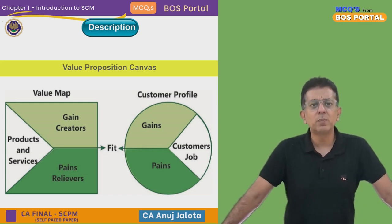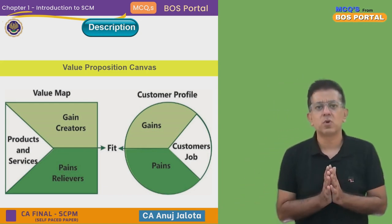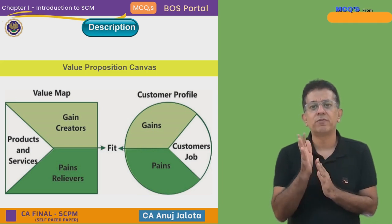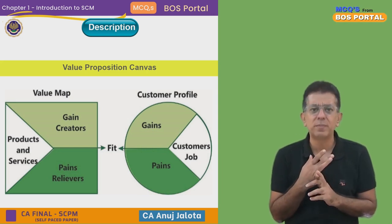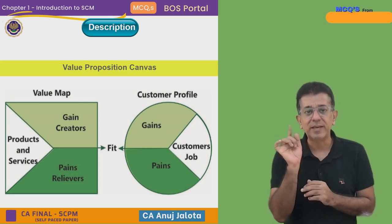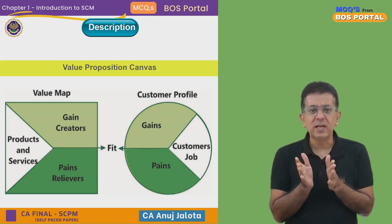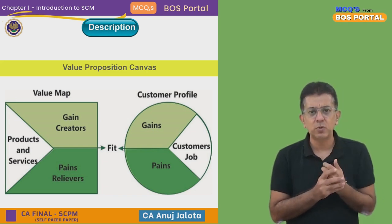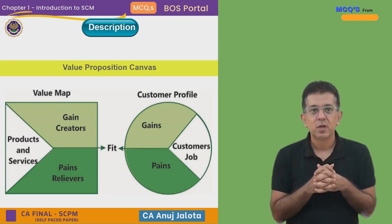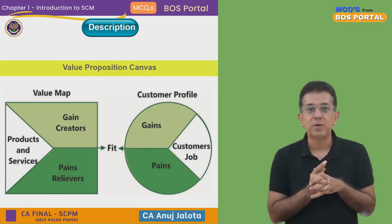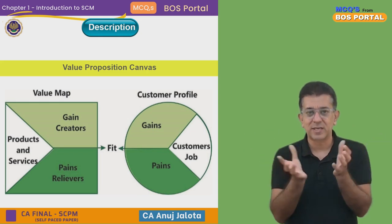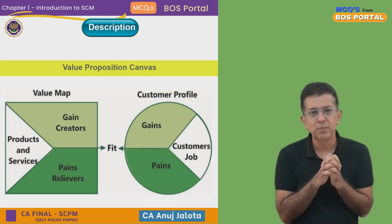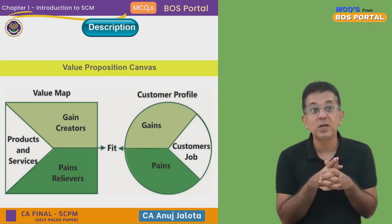The Value Proposition Map or Value Proposition Canvas is all about what value you have to offer to the customer. The customer wants to get some job done — that is on the extreme right. Currently, when he is not using your product or service, he is experiencing something. For example, to file your own income tax return is a lot of pain. ClearTax came up where all your transactions wherever your PAN number is linked are directly filled by them, relieving your pains.